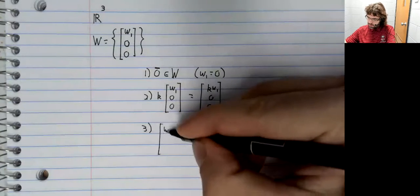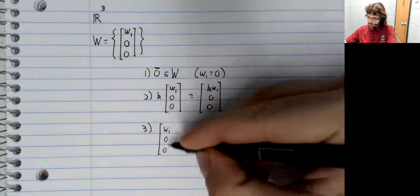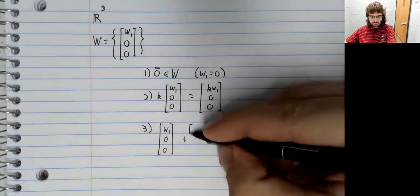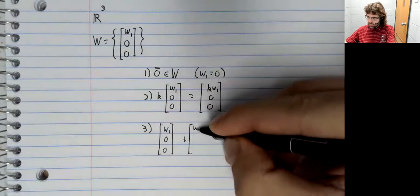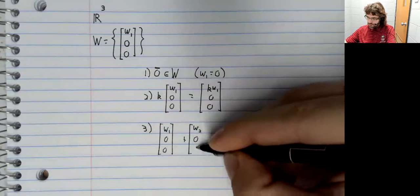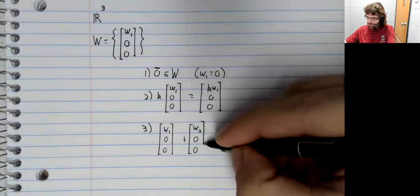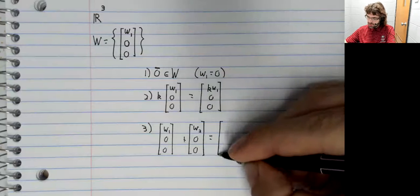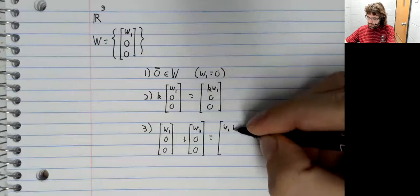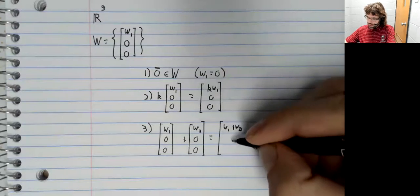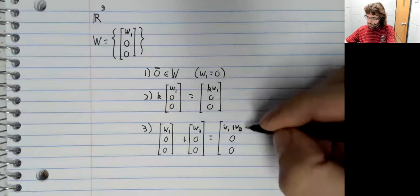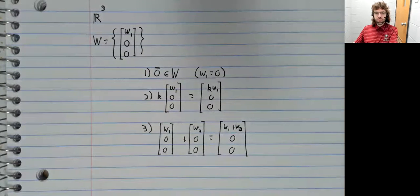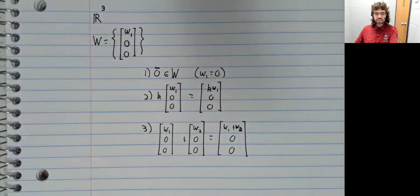And it's closed under addition. If you have two vectors in this set and you add them up, the result is still in this set.